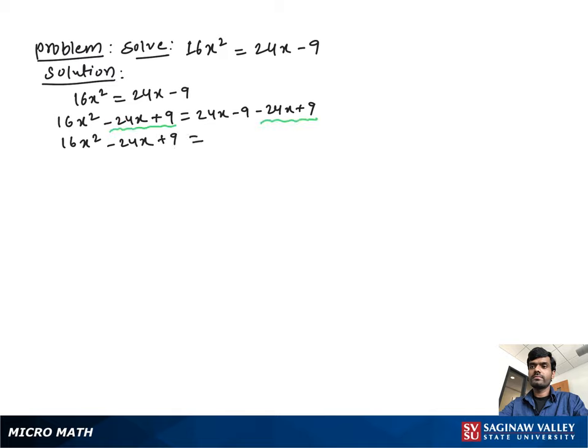Then we get 16x square minus 24x plus 9 equal to 0. Now it looks like a standard form of quadratic equation.